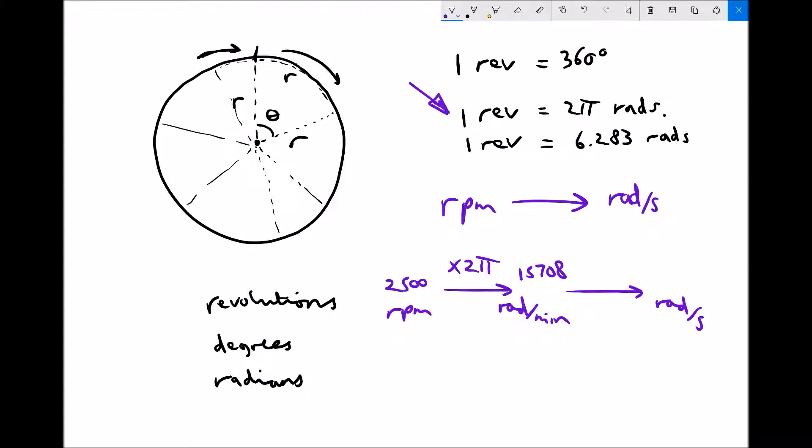But we're not finished there. If something's travelling 15,708 radians every minute then to find out how many radians it's travelling per second we need to divide that value by 60. Dividing by 60 in this instance gives us 261.8 radians per second.